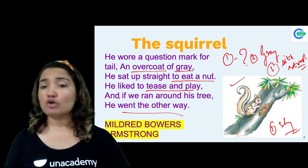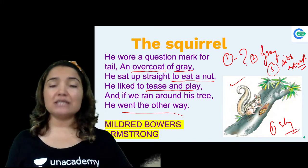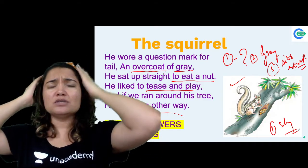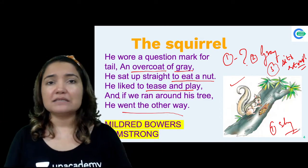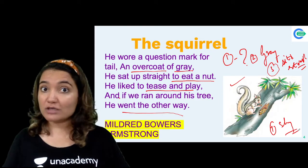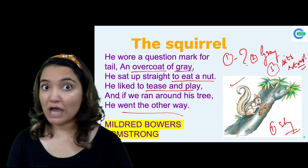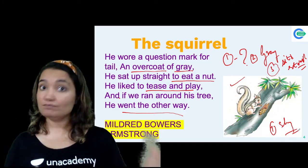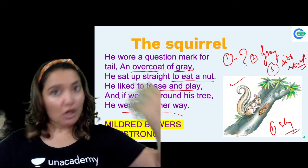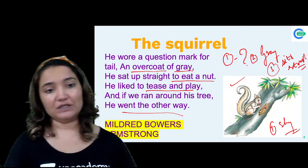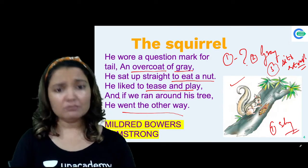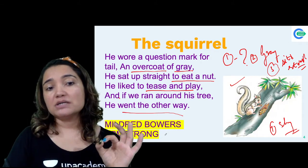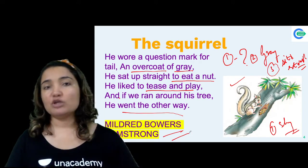If you want more details about this poem, you can find them in your Unacademy subscription. So go ahead and get a subscription for more details. The poet's name is Millard Powers Armstrong — that is the poet's name.